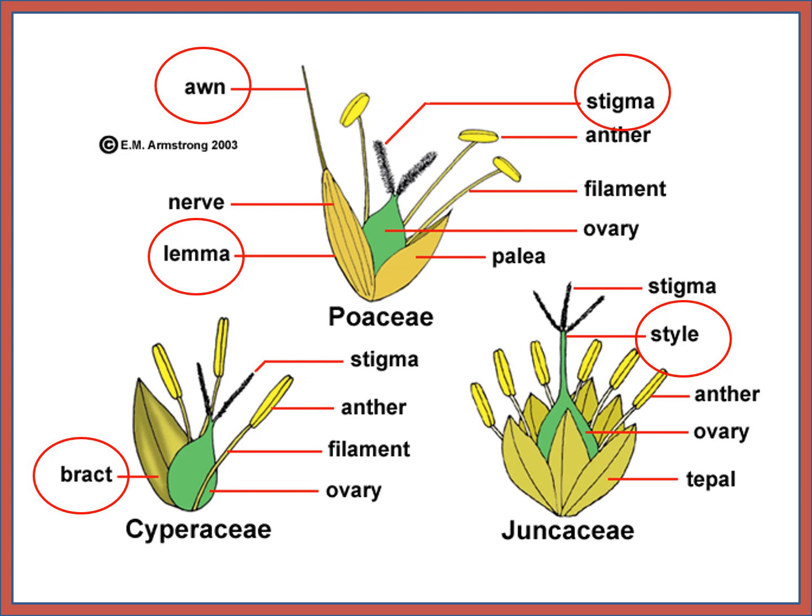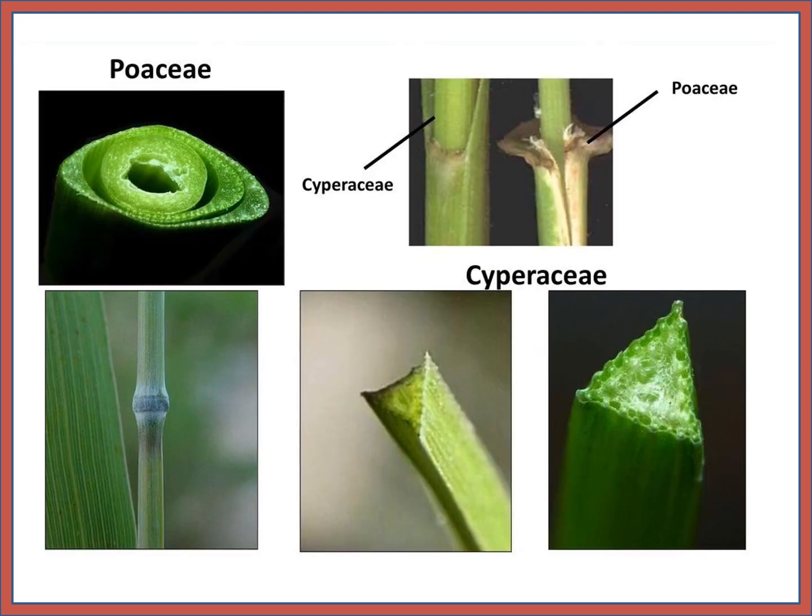The flower parts include stigma, anther, filament, and ovary. You can observe the stem character for Poaceae — the ring-like structures — and triangular stem in Cyperaceae.